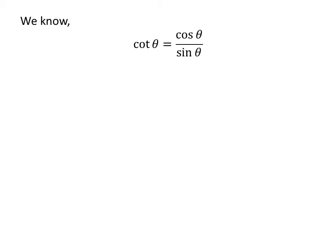We know cotangent of theta equals cosine of theta upon sine of theta. So, application of this identity gives us cotangent of pi minus x equals cosine of pi minus x upon sine of pi minus x.